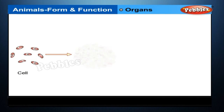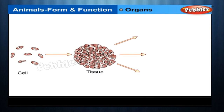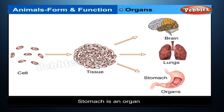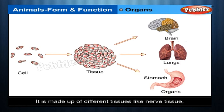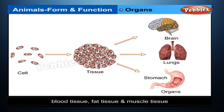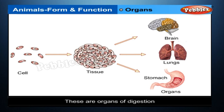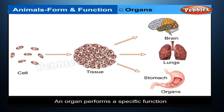Organs. Our body is made up of a number of organs. An organ is made up of different kinds of cells and tissues. Your stomach is an organ — it is made up of different tissues like nerve tissue, blood tissue, fat tissue, and muscle tissue. Your stomach, mouth, food pipe, and small intestine are all organs; these are organs of digestion. An organ performs a specific function.